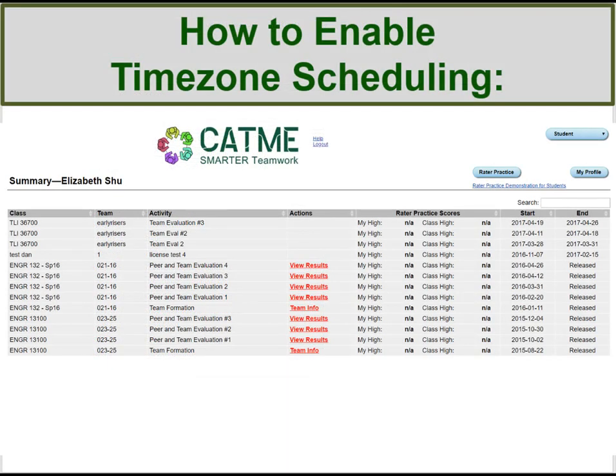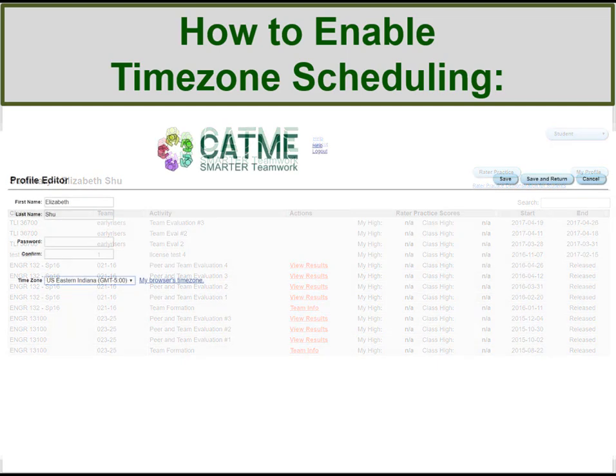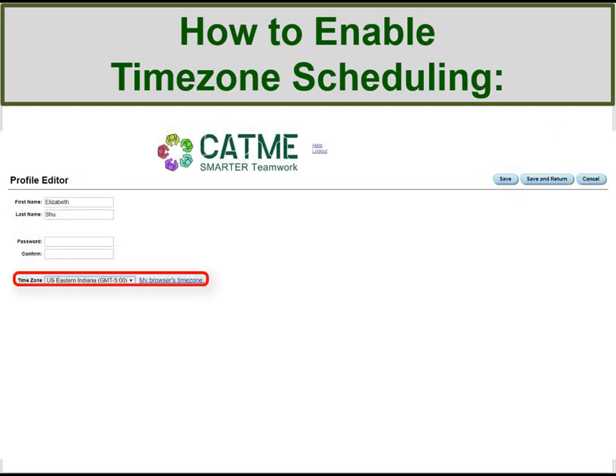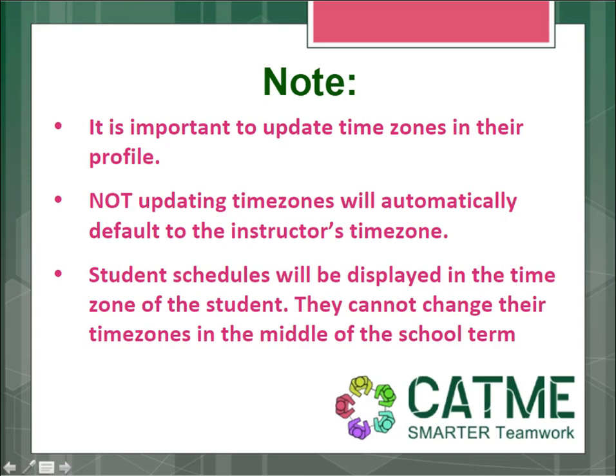Students must update their time zone by clicking the My Profile button at the top right-hand corner. Clicking under their profile, they will select their time zone, and then click the Save and Return button. It is important to note that any student who does not update their time zone in their personal profiles will automatically be defaulted to that of their instructor. Encourage your students to update their profiles before filling out your TeamMaker survey.